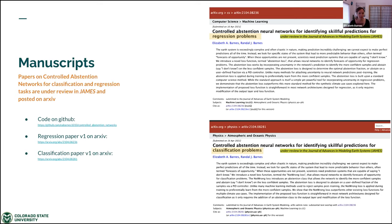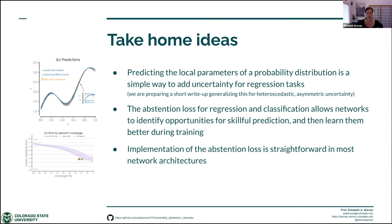Our papers on controlled abstention networks for both classification and regression are on arXiv and currently under review in JAMES, an atmospheric science journal. The code is also up on GitHub for both classification and regression. Some take-home ideas for domain scientists: predicting the local parameters of a probability distribution is a simple way to add uncertainty for regression tasks. The abstention loss really allows the network to identify opportunities for skillful prediction. I framed it in terms of climate applications, but any dataset where you think relationships are hidden amongst a lot of noise — where only specific samples have an opportunity for skillful prediction — the abstention approach may be useful.